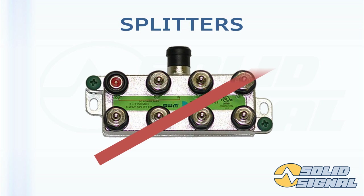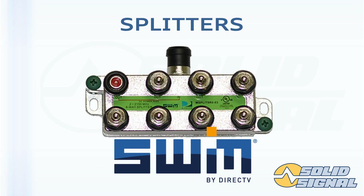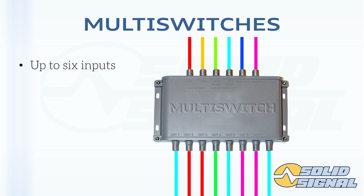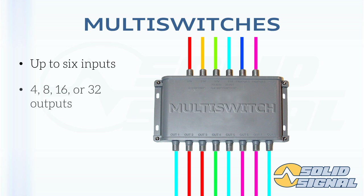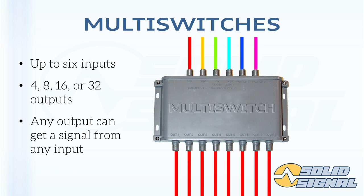Unlike cable television, splitters cannot be used in most cases to split a satellite signal. There is one exception: DirecTV's SWiM technology, which is specifically designed to allow you to use special splitters to split a signal off much more easily. The reason you can't use a regular splitter is because there can be up to six different kinds of signals coming out of a satellite dish at any given time — four from the regular dish and two for international programming only. A multi-switch, on the other hand, has up to six inputs for those six different kinds of signals, and has four, eight, sixteen, or thirty-two outputs that can each run a different receiver. Any output can get a signal from any input without interfering with any of the receivers next to it.